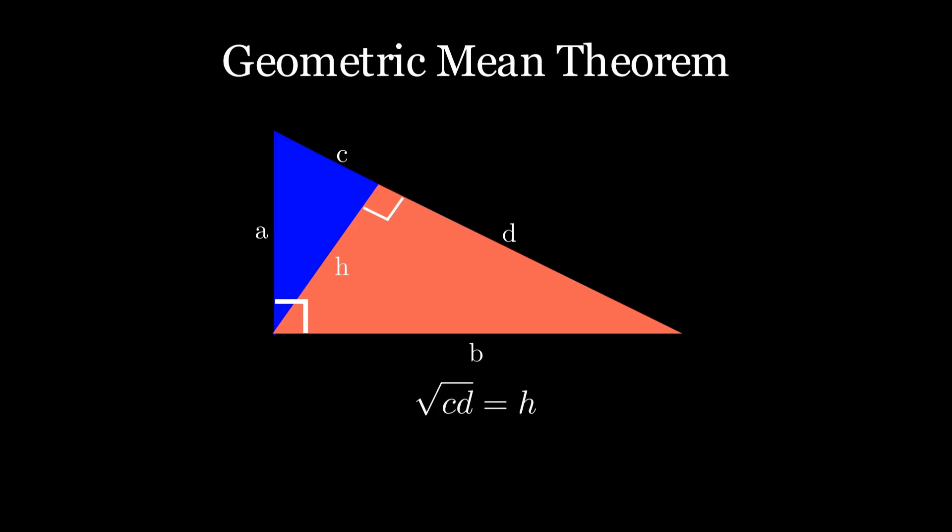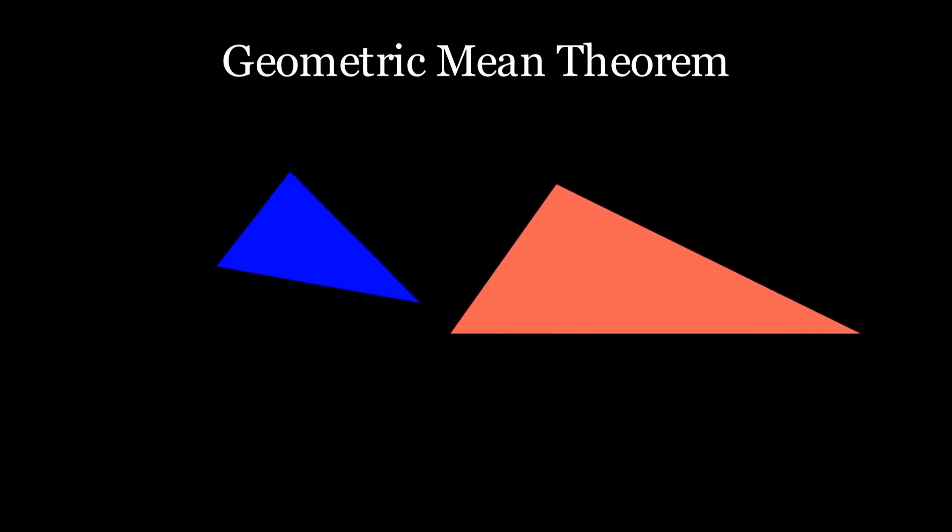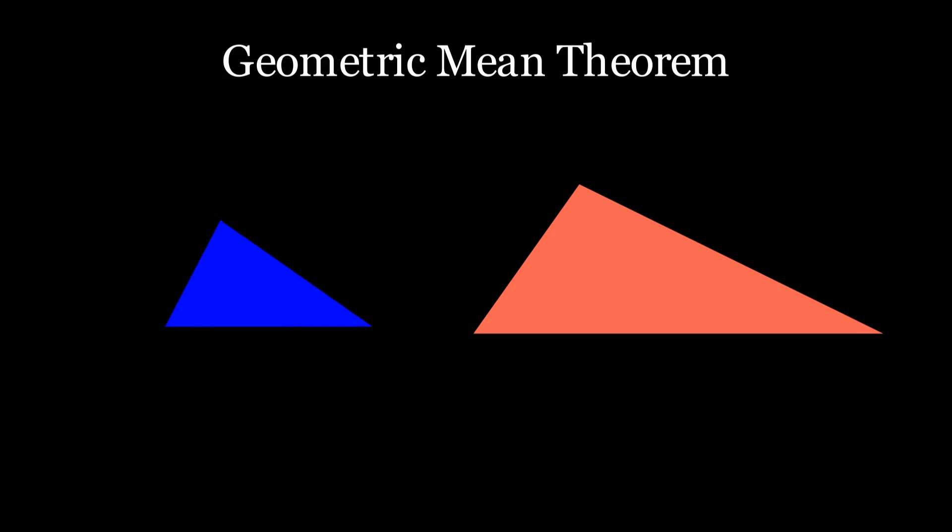How fascinating! But why is this true? Let's see. First, we will break the larger triangle into two smaller triangles. These two triangles have a special property. They are similar to each other.